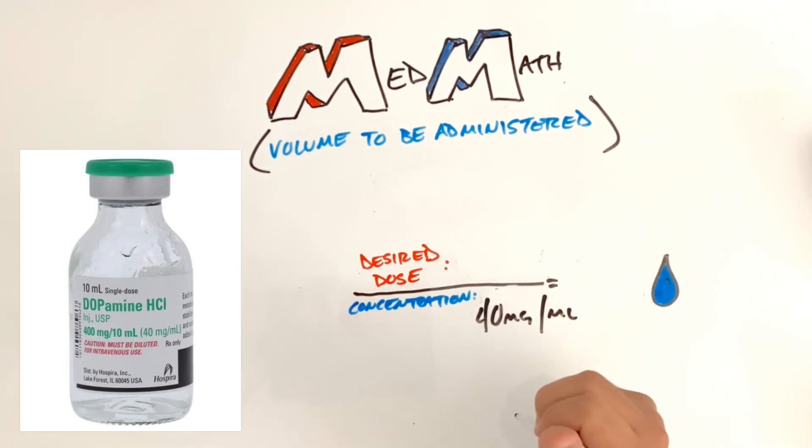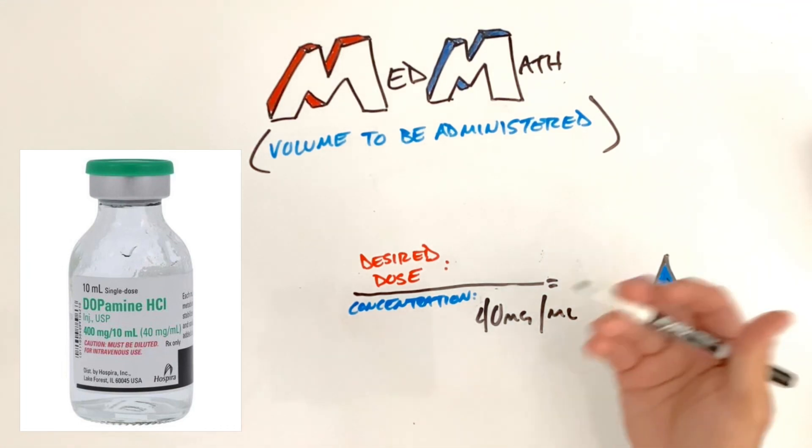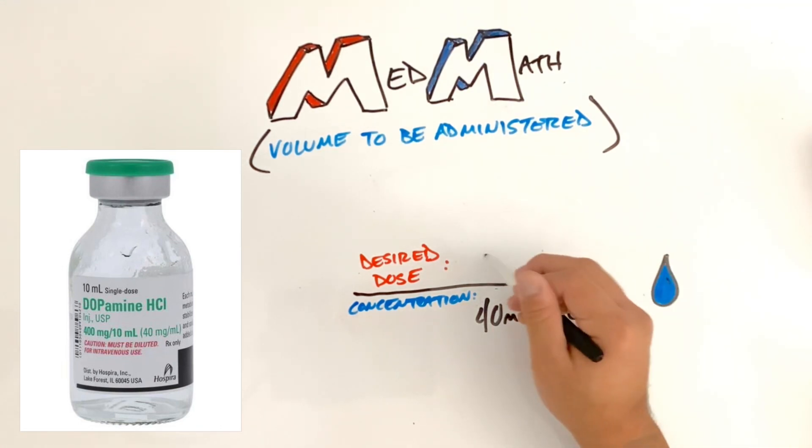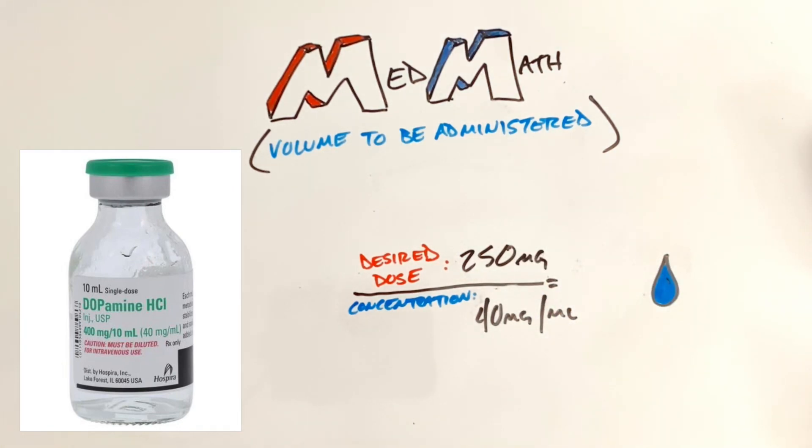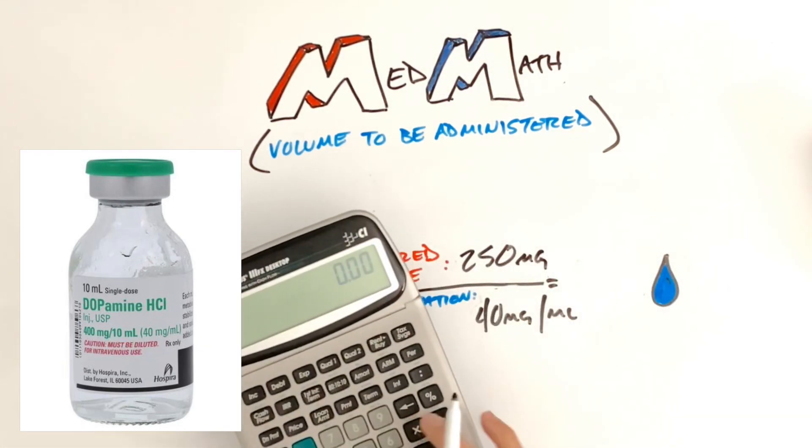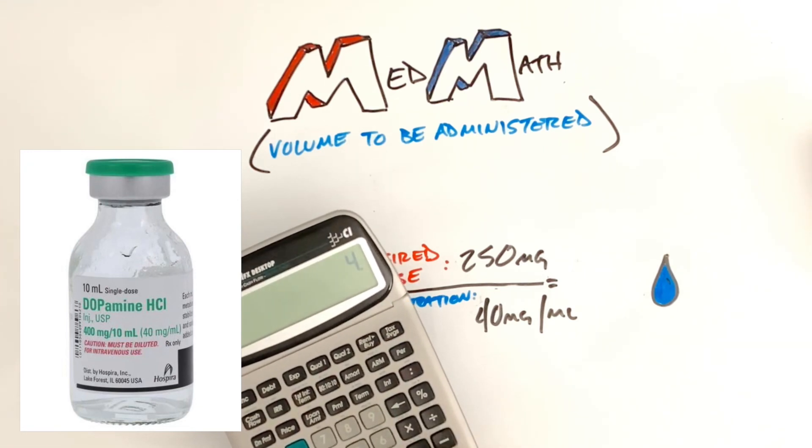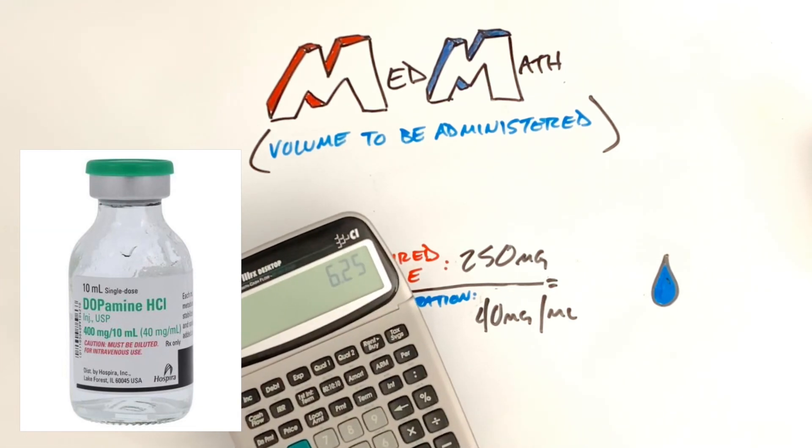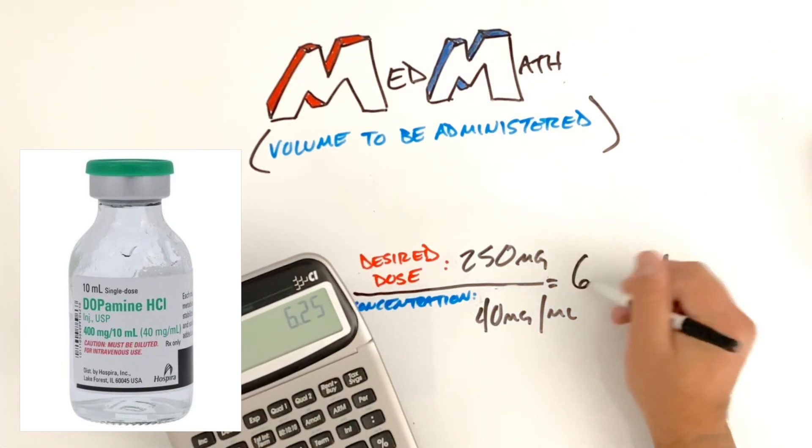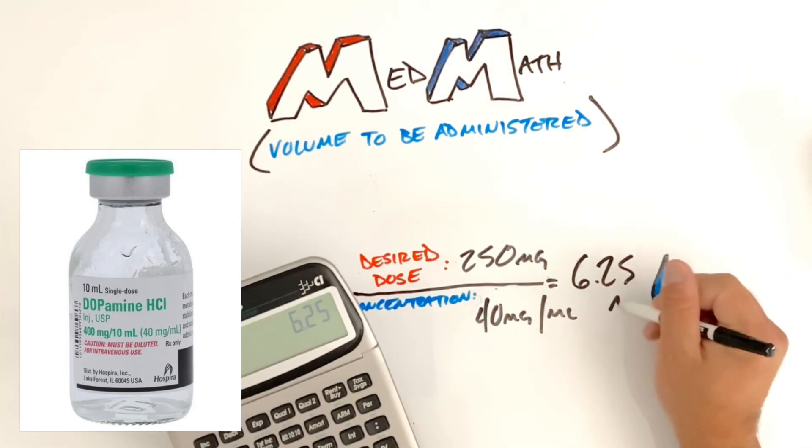Now let's plug in the desired dose. Let's say your standing order was 250 milligrams. All we're going to do is take a calculator, do our 250 milligrams. We're going to divide it by our concentration, and it's going to give us 6.25 mLs.